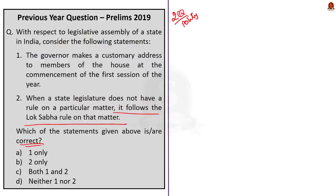Option A: one only. Option B: two only. Option C: both one and two. Option D: neither one nor two. I hope you will be very sure about statement 1 and very confused about statement 2. We will discuss both the statements in detail.